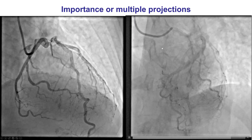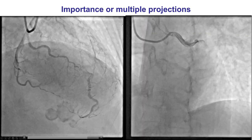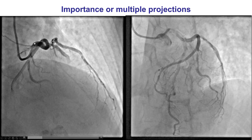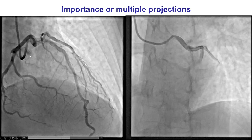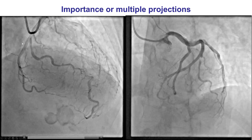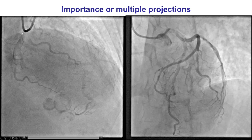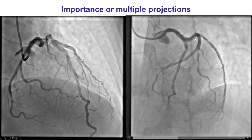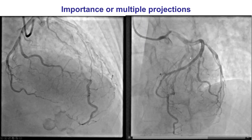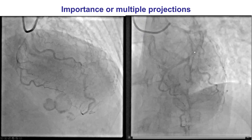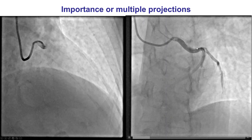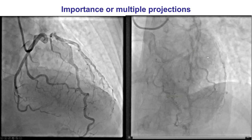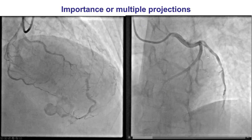In osteal lesions, it is important to do multiple projections. This is an example where the RAO cranial does not really show the lesion of the ostium of the obtuse marginal branch. However, the LAO cranial does nicely demonstrate the ulcerated lesion at the origin of the OM2.